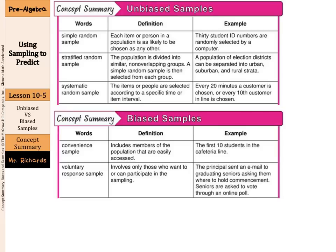We have our concept summary boxes of types of unbiased samples compared to types of biased samples. In our unbiased samples — those selected at random and representative of a larger population — a simple random sample means each item or person in a population is as likely to be chosen as any other. An example: 30 student ID numbers are randomly selected by a computer.